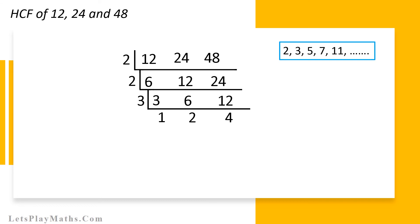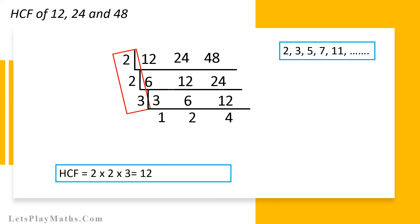Once we reach this point, it is time to find out the HCF. If we multiply all the prime numbers present in the red box, it will give us our HCF. In other words, if we multiply 2, 2 and 3, we will get our HCF as 12. Hence, HCF of 12, 24 and 48 is 12.